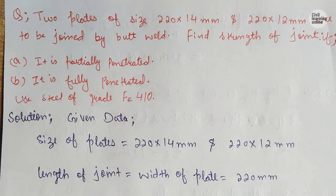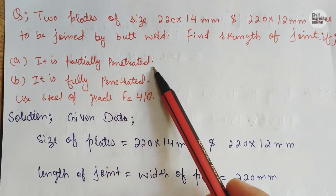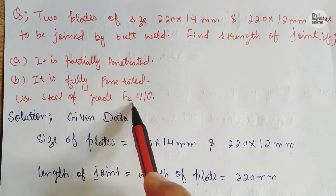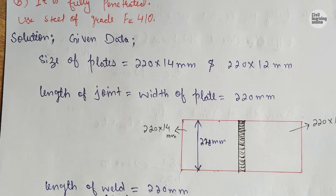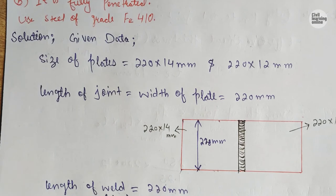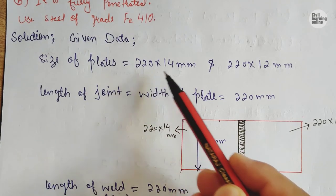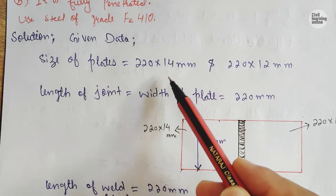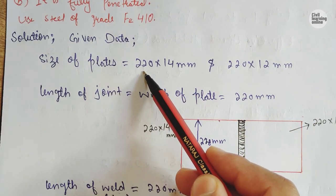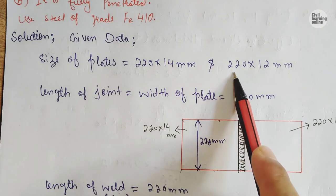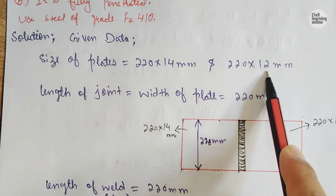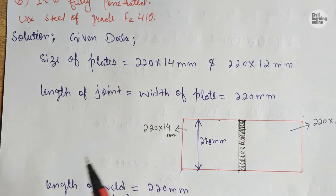Now we go back to our question. We have seen the conditions — partial penetration and full penetration. The grade of steel used is FE 410. Given data: the two plates are 220 mm × 14 mm and 220 mm × 12 mm. The width of both plates is 220 mm, and the thickness of the thinner plate is 12 mm.